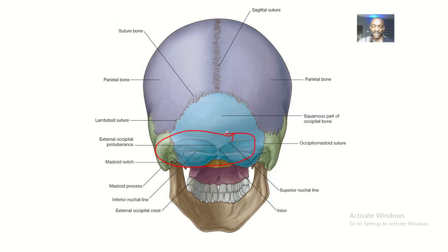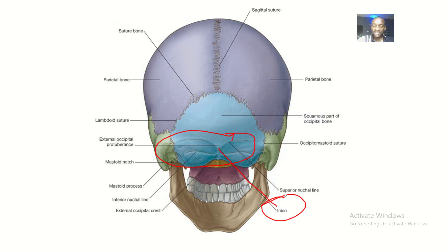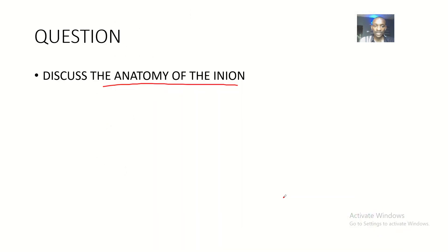Looking at this, if this whole place is the external occipital protuberance, the highest place is here — tracing it down is where you see the inion. So the inion is simply the highest point on the external occipital protuberance. I hope you guys enjoyed this tutorial, see you in the next one, bye for now.